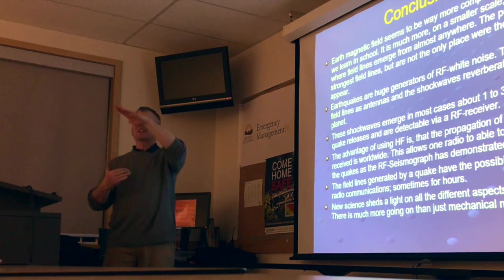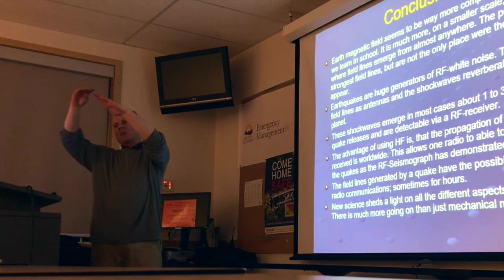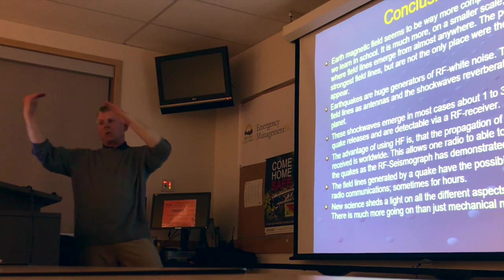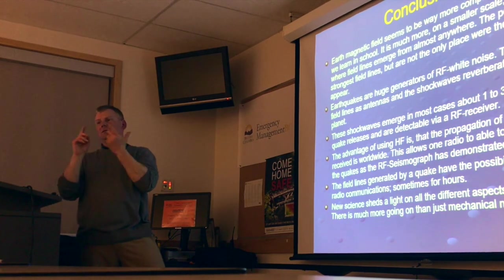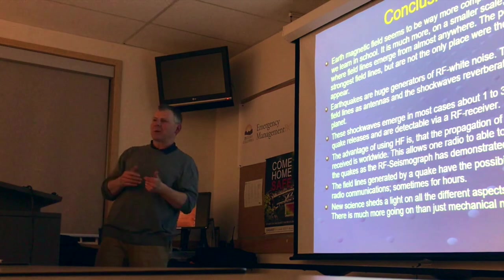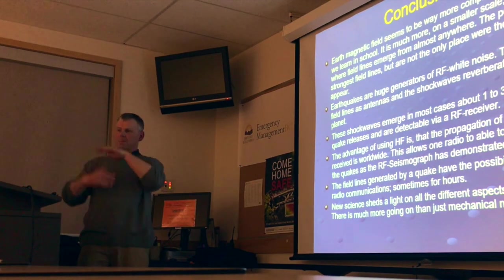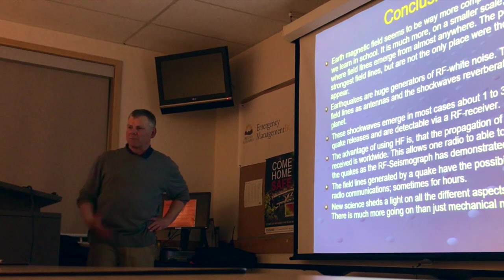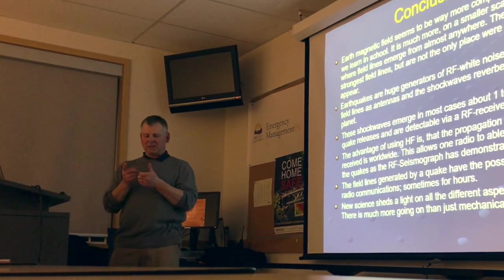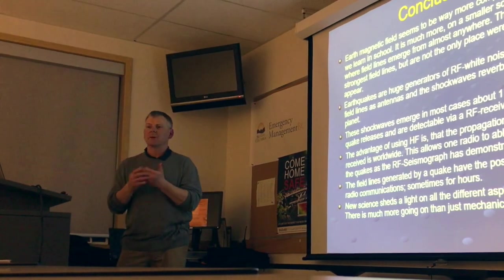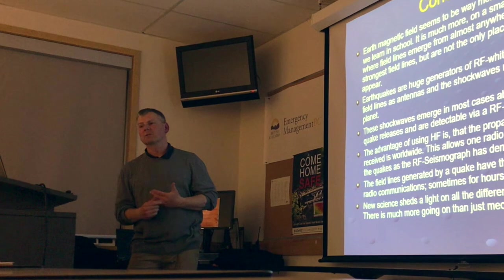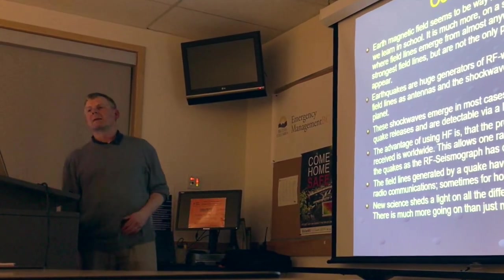We want to be able to see signals from, say, Europe bouncing off the ionosphere. As long as nothing disturbs the path — solar wind, solar particles, thunderstorms, or now earthquakes — we can measure propagation changes. Two things happen with an earthquake: first, the pre-noise we can see on 80 meters, and second, signal dropouts from disruption of the ionosphere.